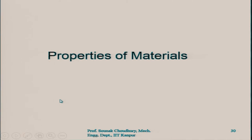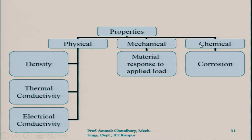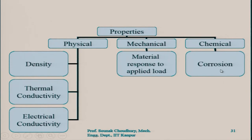Now let us look at the properties of all those materials we have discussed. Properties can be subcategorized as physical, mechanical, or chemical. Physical properties include density, thermal conductivity, and electrical conductivity. Mechanical properties cover material response to applied load — bending, stress, strain, and so on. Chemical properties include corrosion. We will focus on those most important in mechanical engineering for design and manufacturing.